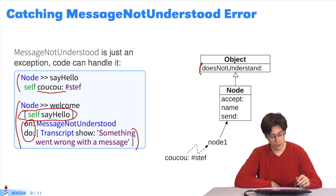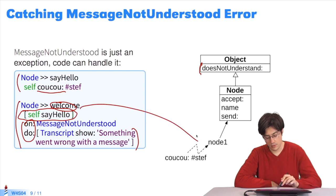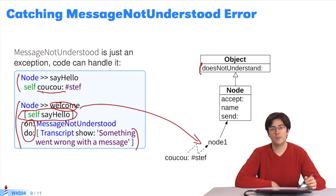Say we send the message welcome to Node1. Knowing that cuckoo is not implemented, the console will display something went wrong with the message.